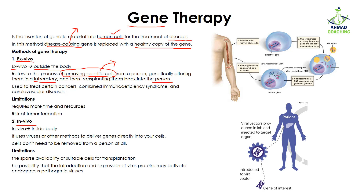Here we can see bone marrow stem cells in which there is a defective gene, shown in red. We remove the cells and use retroviruses that carry a healthy gene. The retrovirus enters the cell, and the healthy gene is inserted into the chromosome, replacing the defective gene. These corrected cells are then transplanted back into the body, where they multiply and the disorder is decreased.